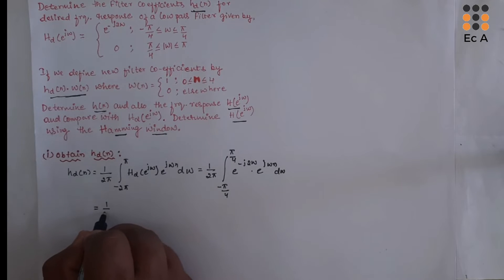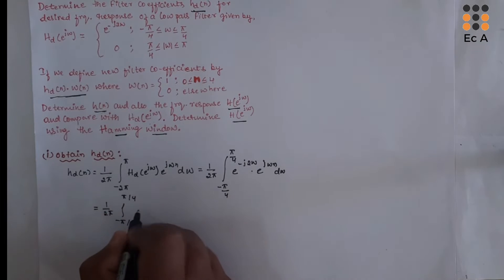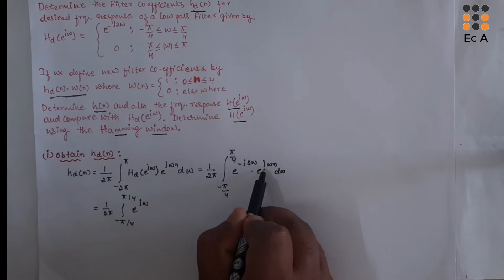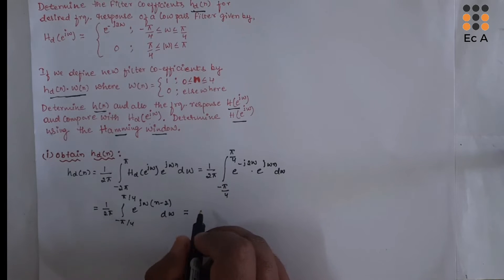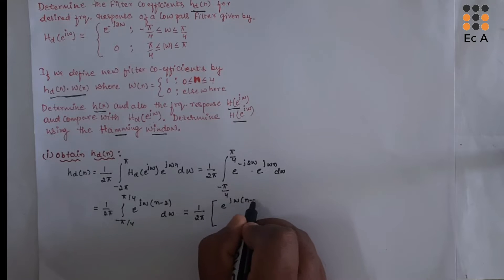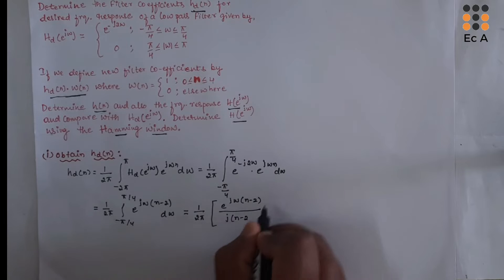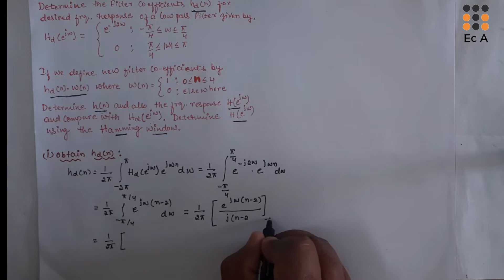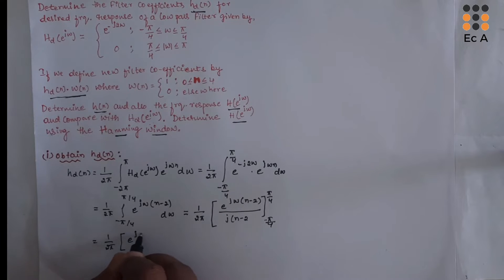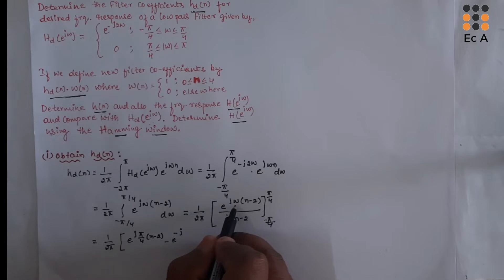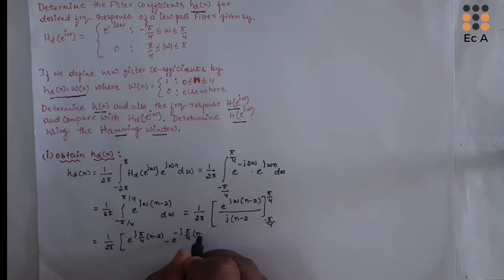We can write this as 1 by 2π, integration from minus π/4 to π/4 of e^(jω(N−2)) dω. Performing the integration, we get e^(jω(N−2)) divided by j(N−2), with limits from minus π/4 to π/4. Substituting the limits, we get e^(j·π/4·(N−2)) minus e^(−j·π/4·(N−2)) divided by j(N−2), all multiplied by 1 by 2π.